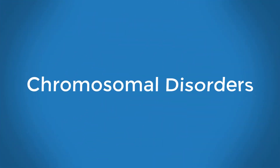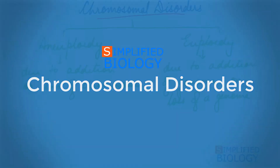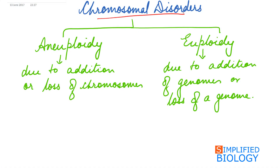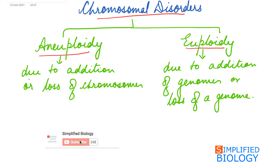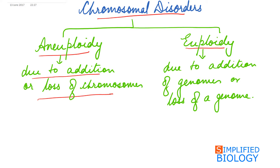Welcome to Simplified Biology. Today's topic is chromosomal disorders. Chromosomal disorders are of two types: aneuploidy and euploidy. Aneuploidy occurs due to either addition or loss of chromosomes, while euploidy occurs due to addition or loss of a genome — meaning addition or loss of a complete set of chromosomes.